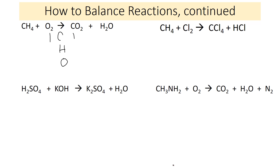For hydrogen: I have 4 on the reactant side (from H₄) but only 2 on the product side. To fix that, I put a 2 in front of water, giving me 4 — hydrogen is now balanced. For oxygen on the reactant side I have 2; on the product side I have 2 from CO₂ plus 2 from water (because of the coefficient 2), giving 4 total. So I put a 2 in front of O₂, giving me 4 on that side as well — the equation is balanced.